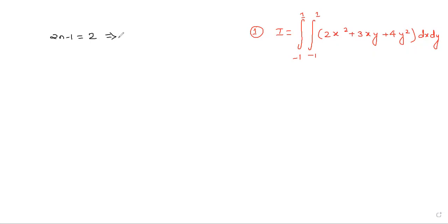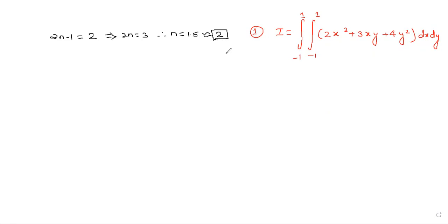From here, if you solve, 2n can be written as 3, which means the n value is equal to 1.5. As we know, if the value is greater than an integer like 1, 2, or 3, then we take n equal to the next integer. So if it is 1.5, we need to take n equal to 2. This is a Gaussian point problem with n equal to 2.